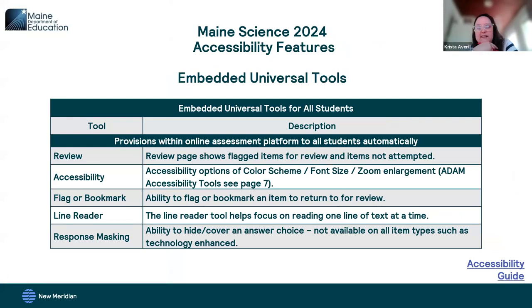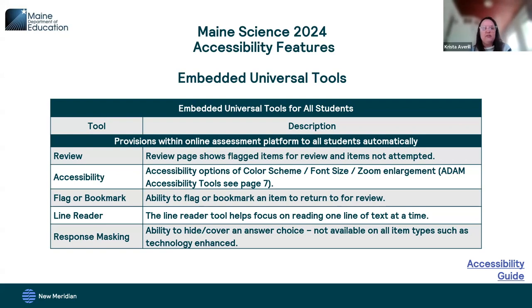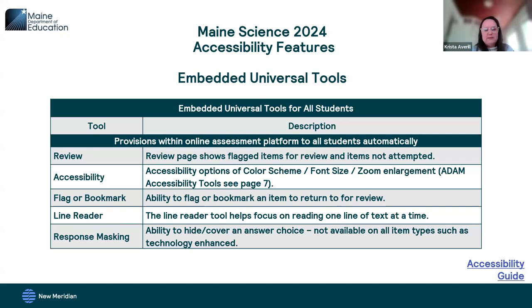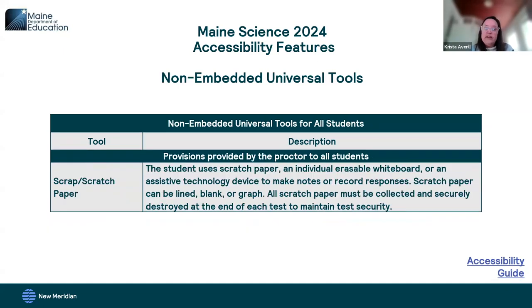I'm going to be discussing accessibility features. It's especially important that your proctors are familiar with both the embedded universal tools and the supports and accommodations. Within the Atom platform, there are several embedded universal tools you'll want to make sure your students know how to navigate via things like the practice test before they begin the actual assessment. That includes things like flagging items for review later, changing the color scheme, the font size or zooming in, using the line reader, and response masking, which is the same as answer eliminator.